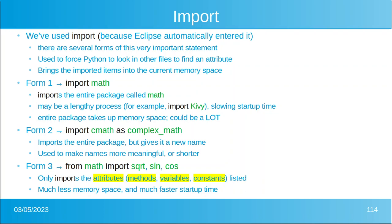This is useful because if you're writing a thousand lines of code and you expect cmath to become cmath 2 at some point, you would only have to change that one import line — everywhere else in your code it would still be called complex_math. Renaming is also useful for creating shorter names or names more meaningful to you. The third form is: from math import, and then list whatever methods you're importing. This only imports the attributes listed after the word import — much quicker to start up and much less memory usage.